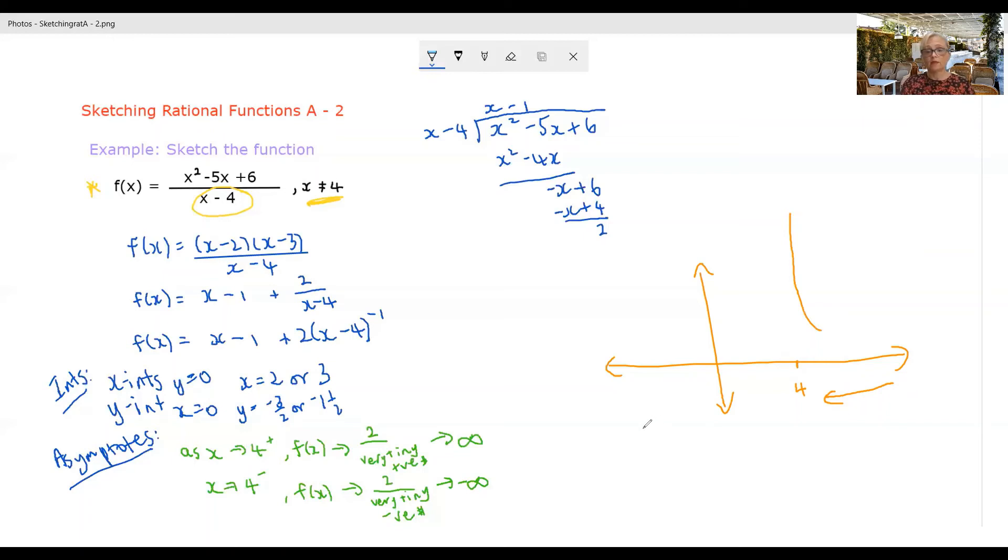And as we're coming in from below, so as we're a little bit lower than our four, the function's going to tend towards negative infinity. And the function is not defined at x equals four.